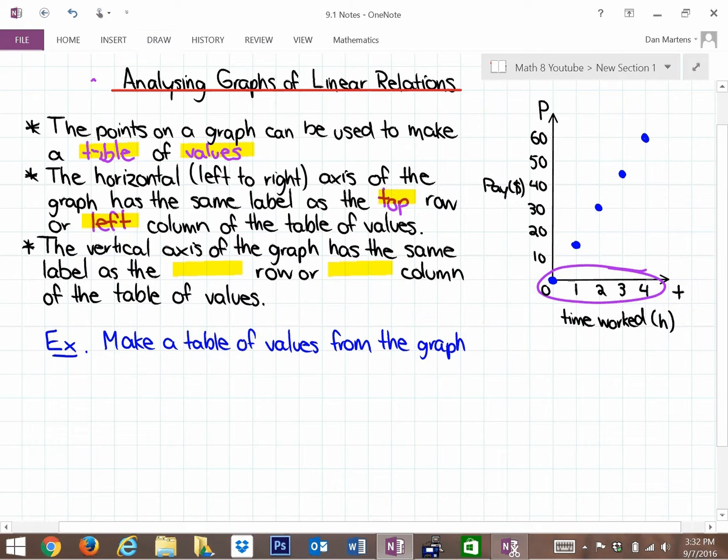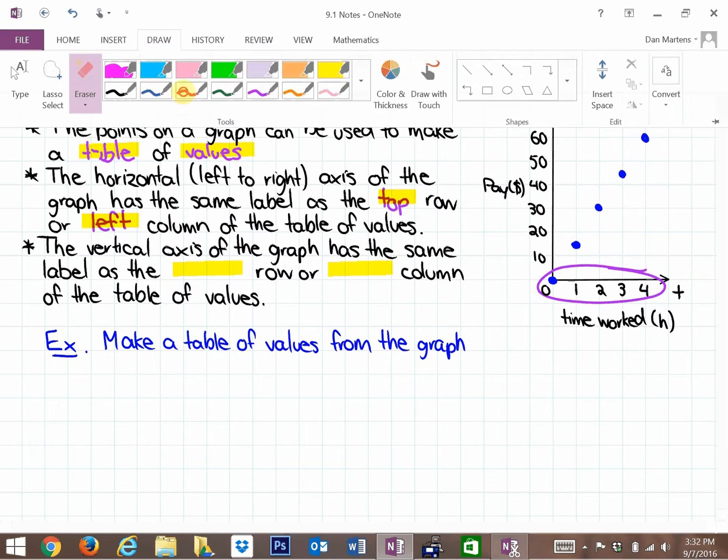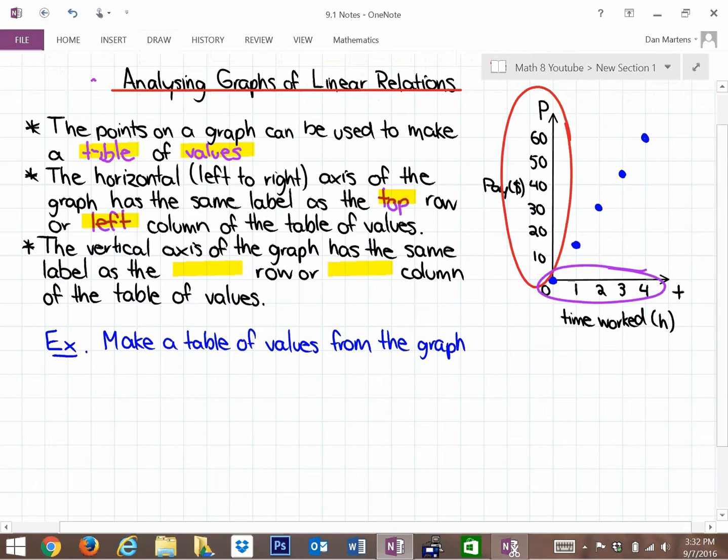Whereas secondly, the vertical axis on the graph, this vertical axis on the graph, has the same label as the bottom row or second column, or I could say the right column of the table of values.